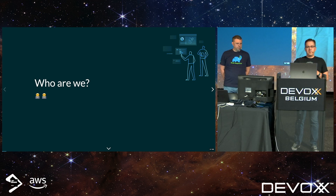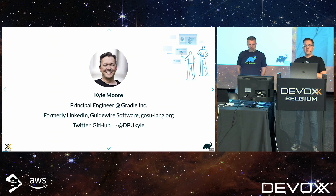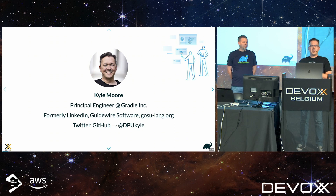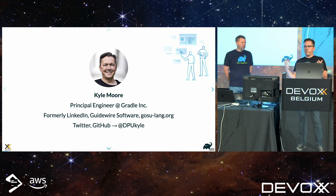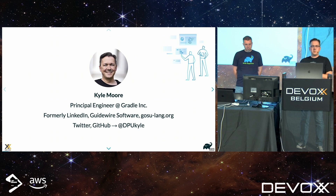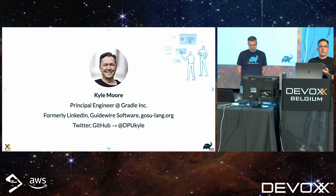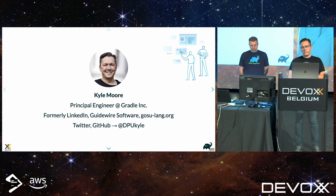So who are these two guys? Hi everyone, my name is Kyle Moore. I'm a principal engineer with the Gradle Buildtool. If you can't tell by my voice, I'm a Yank — I'm based in California. I was previously owning all of the build infrastructure at LinkedIn where we had 12,000 different repositories I was in charge of. Prior to that, Guidewire Software, where I was a committer and maintainer of the Gosu language at GosuLang.org.